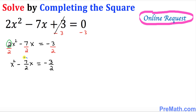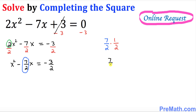Now look at the coefficient of X, which is 7 over 2. Disregard the negative sign — only consider 7 over 2. Divide this by 2, which is the same as multiplying by 1 over 2, giving us 7 over 4.